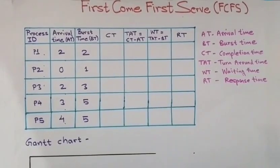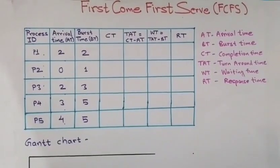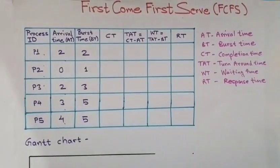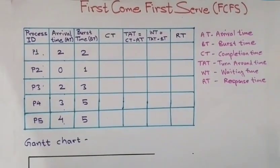In this algorithm the CPU is allocated to the processes in the order they request it. When the first process enters the system it starts its execution immediately and runs or executes till it completes its execution.